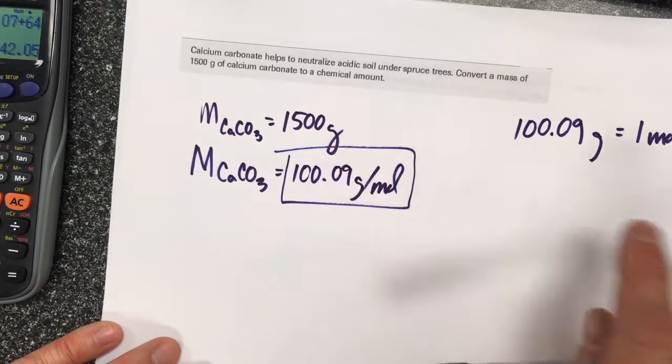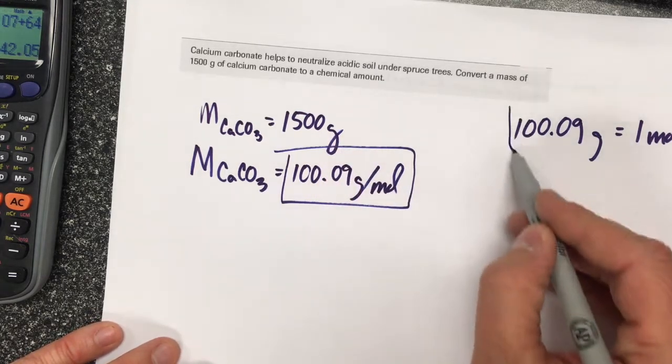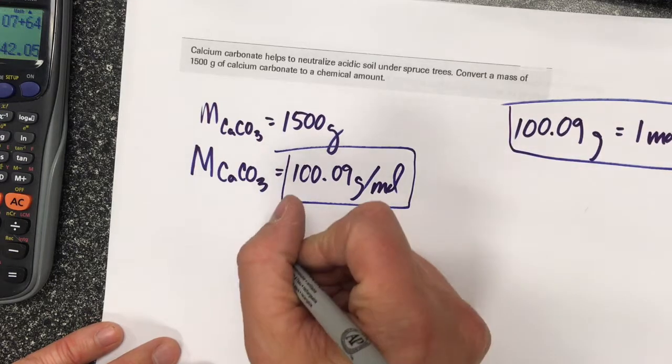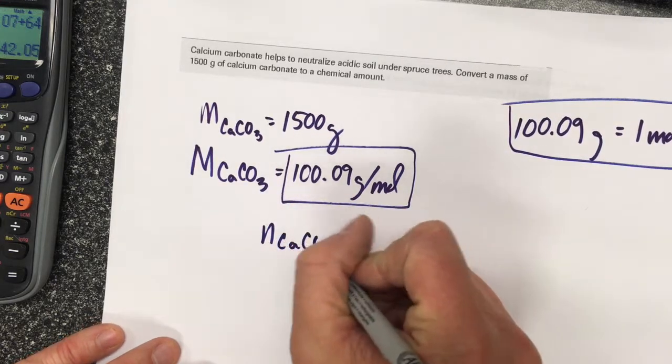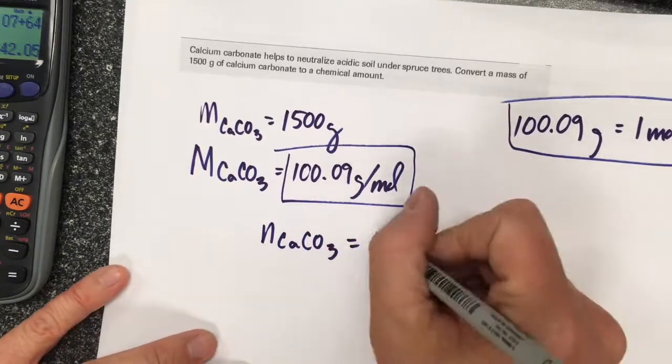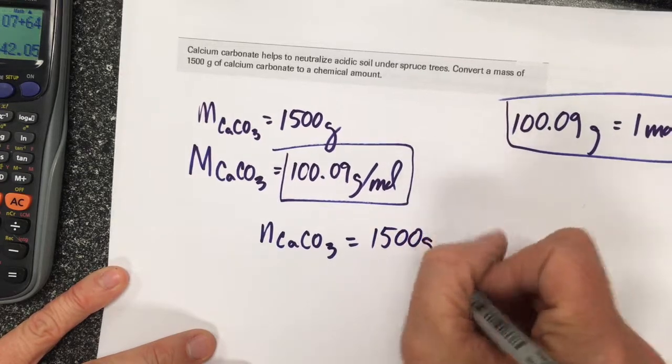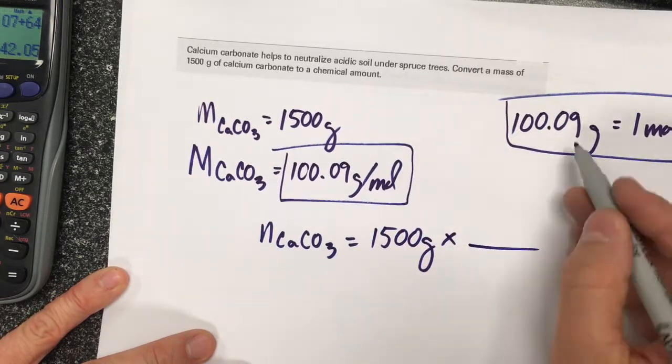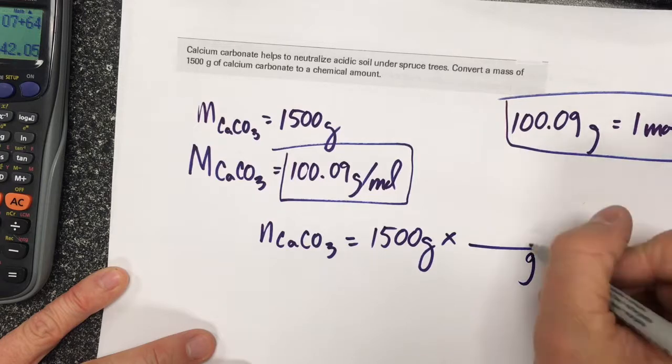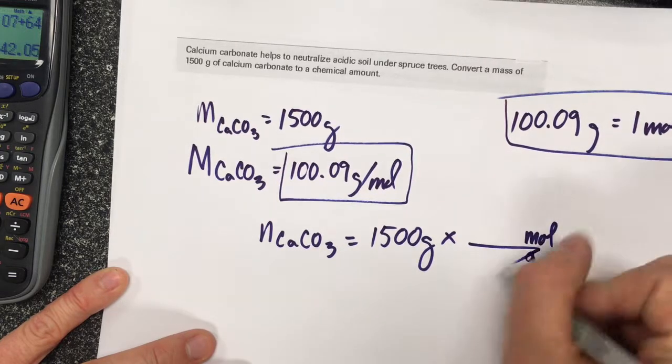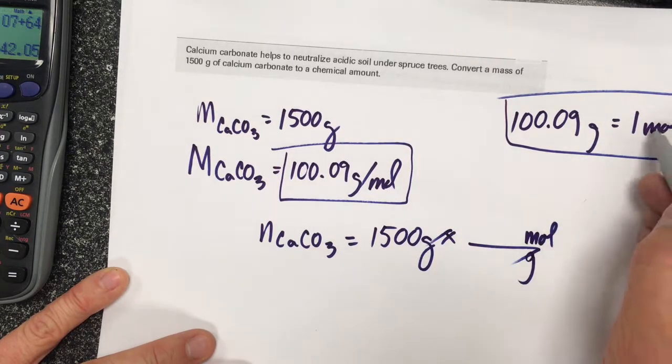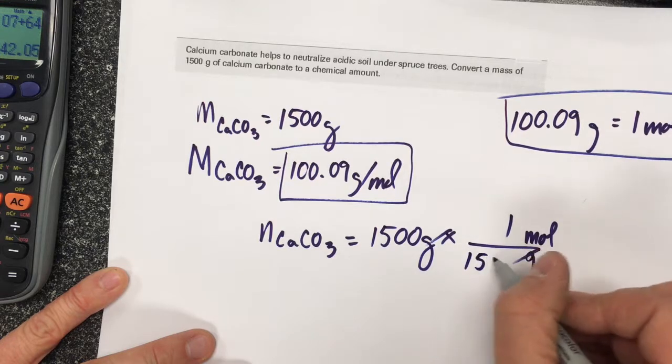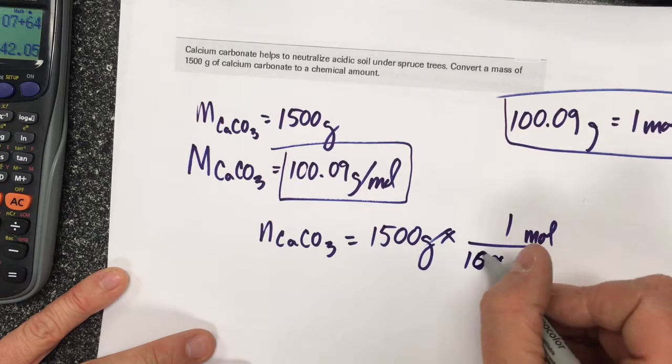The number of moles of calcium carbonate equals 1500 grams times - I want grams in the denominator and moles in the numerator because that's going to cancel out my grams - one mole per 100.09 grams. So 1500 times one divided by 100.09 grams will give me my moles.